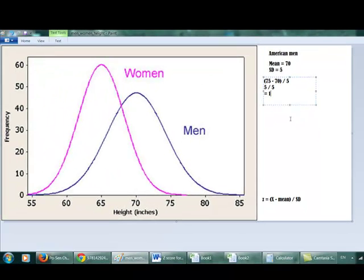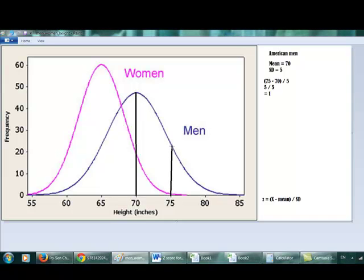Alright, so the z-score of 75 is 1. The next step for us is to figure out how big is the area between the mean 70 and 75.